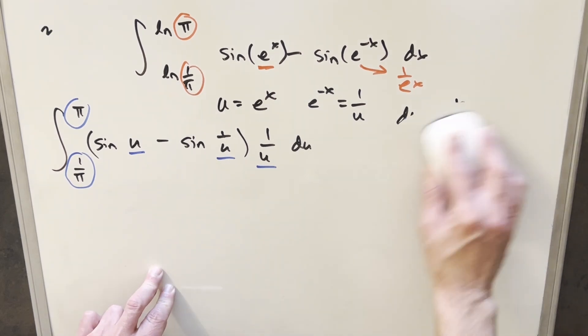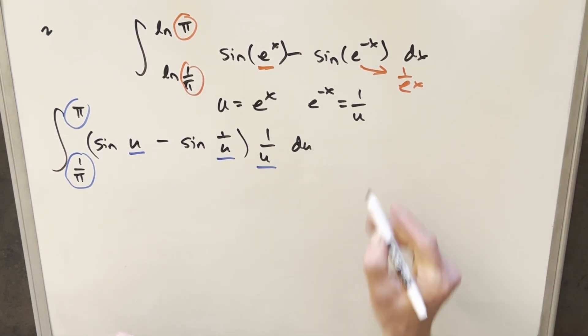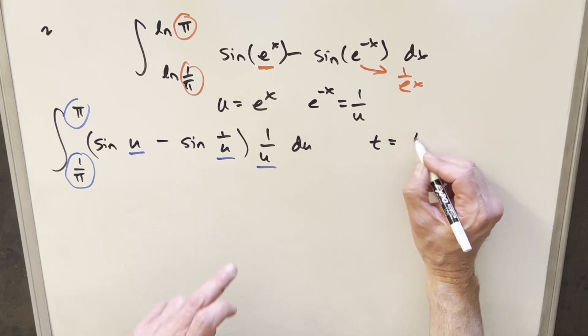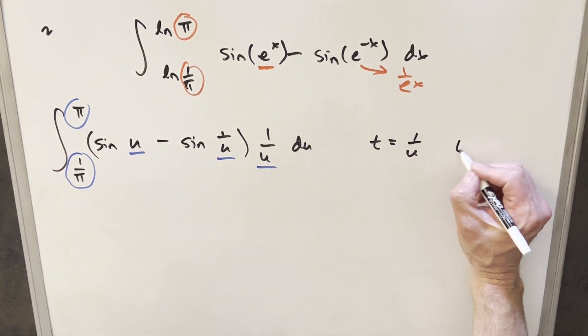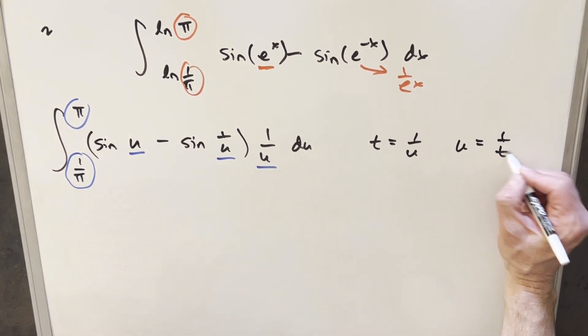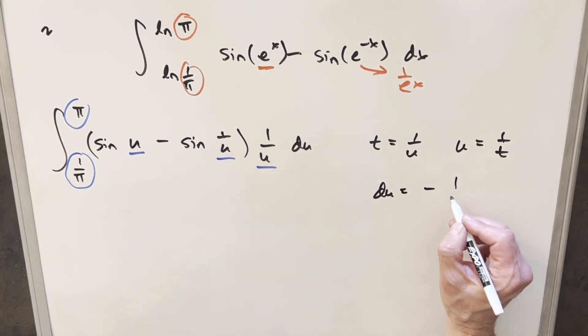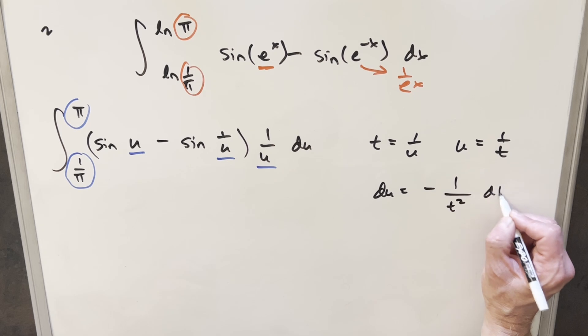For this substitution, let me make a little more space. We'll use t. So I'm going to set t equal to 1 over u. And then doing this, we'll solve for u. We'll have u equals 1 over t. We'll take a derivative here on u. So for our du, this is going to become minus 1 over t squared dt.